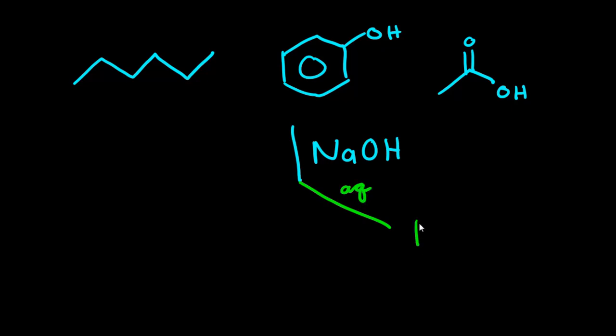So in this case, what you'd end up with is you would get both the phenolate anion and the acetate anion in the aqueous phase. But what you really wanted to do was to separate out one of these from the other.